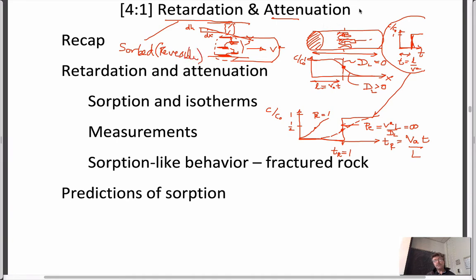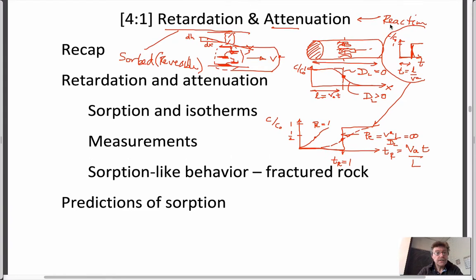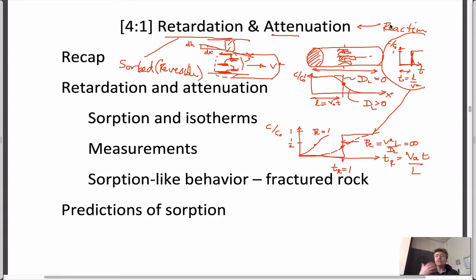As opposed to attenuation, which often refers to a chemical reaction where you have a transformation of fluid components from the aqueous phase into solid compounds in the solid phase. Therefore they're both removed from the dissolved aqueous component and attached to the substrate — the rocks — which aren't moving. Retardation and attenuation are driven by processes that take stuff out of the aqueous phase and put it onto the solid substrate, reducing the concentrations in the water.